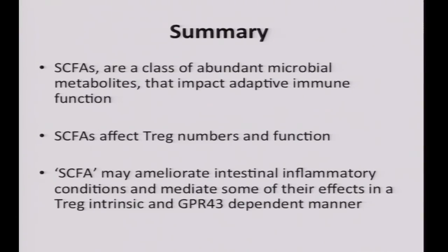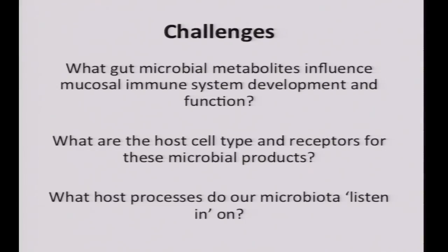To summarize: short-chain fatty acids are a class of abundant microbial metabolites that affect adaptive immune function, specifically Treg numbers and function, and appear to ameliorate intestinal inflammation. Challenges ahead include: which gut microbial metabolites affect mucosal immune system responses? What are the host cell types and receptors for these microbial products? And what host processes do our microbiota listen in on? Examples include sex hormones like estrogen and progesterone, and reactive oxygen species.